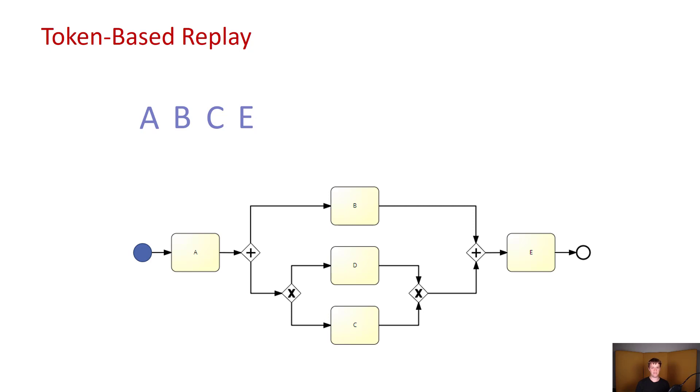We have a simple trace, A, B, C, E, and a relatively simple process model to go along with it. At the very beginning of token-based replay, we place one token at the beginning of the process model and then we look at the trace and figure out what are the events that we need to execute.